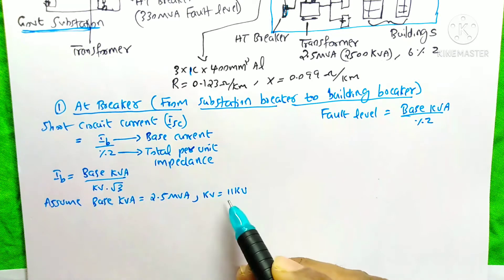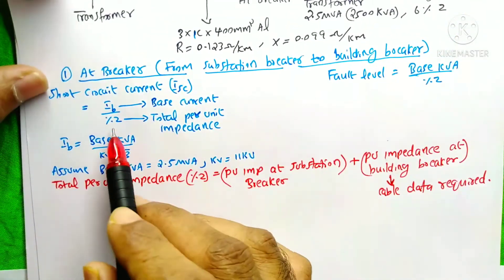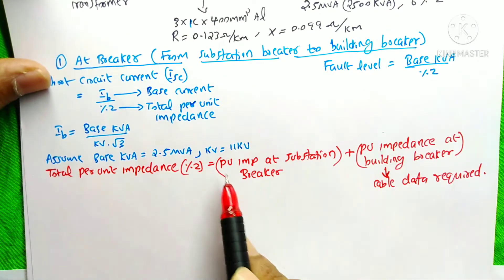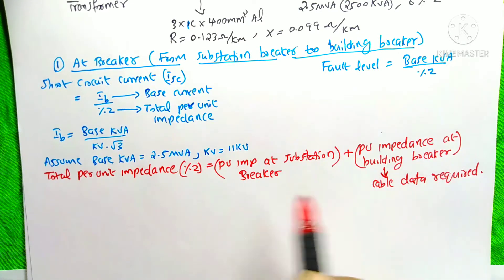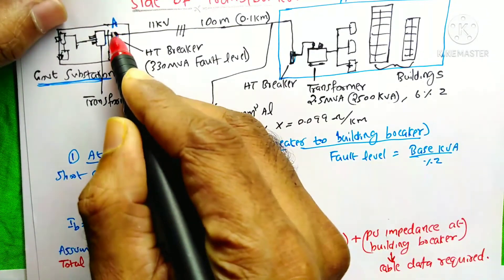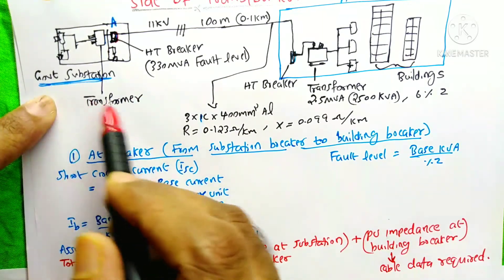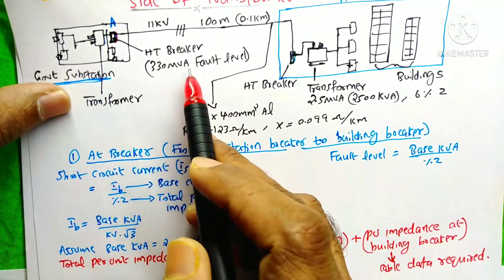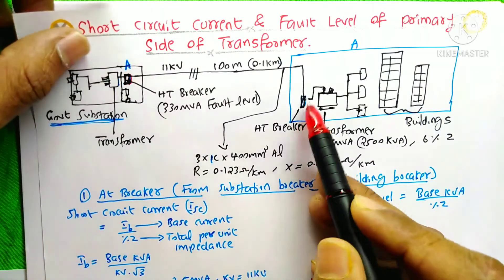The KV is 11 KV, since our line is an 11 KV line. The only missing data is the total per unit impedance. This total per unit impedance equals the per unit impedance at the substation breaker plus the per unit impedance at the building breaker. The per unit impedance at the substation breaker requires the fault MVA of that breaker — you need to ask the government engineers for the fault level. I already have it: it is 330 MVA.